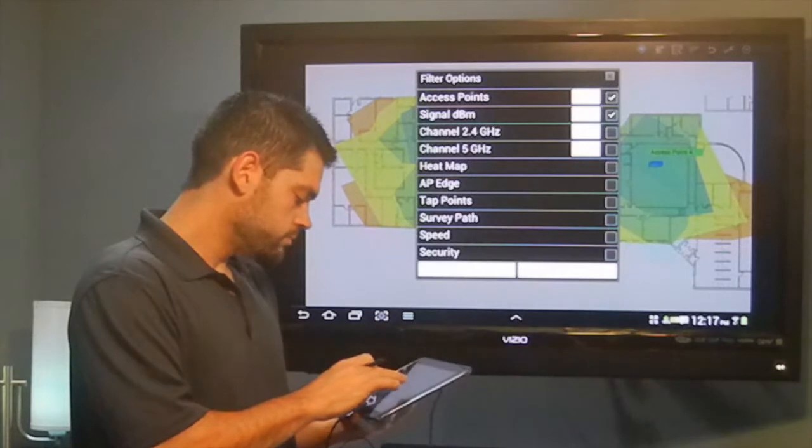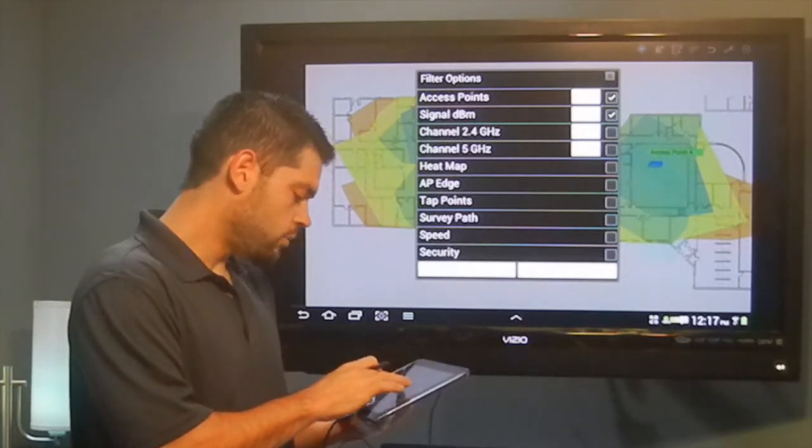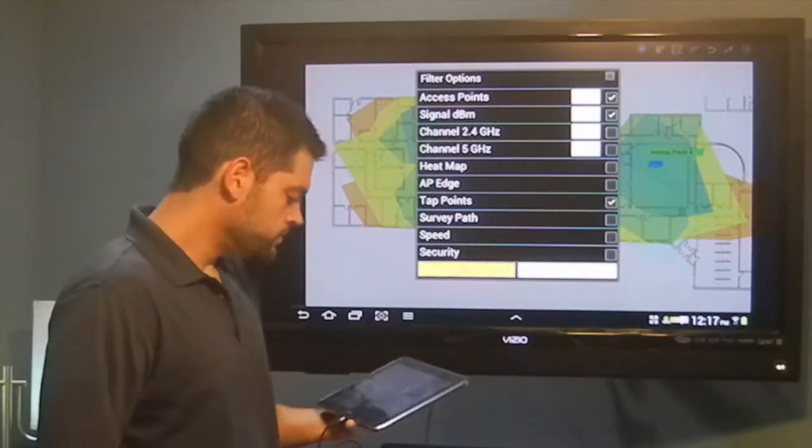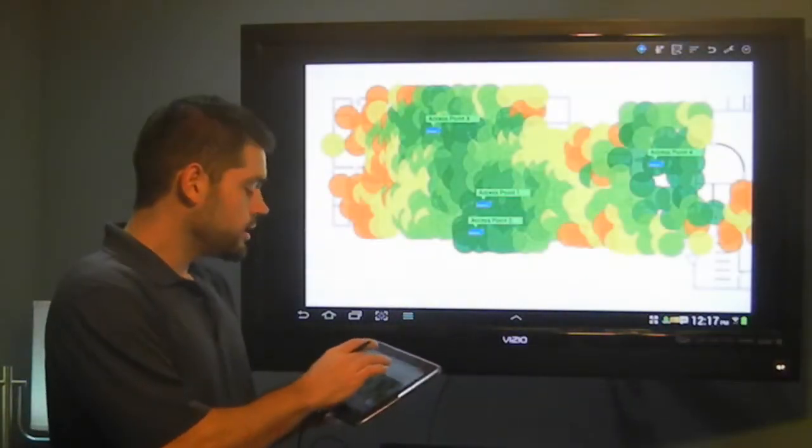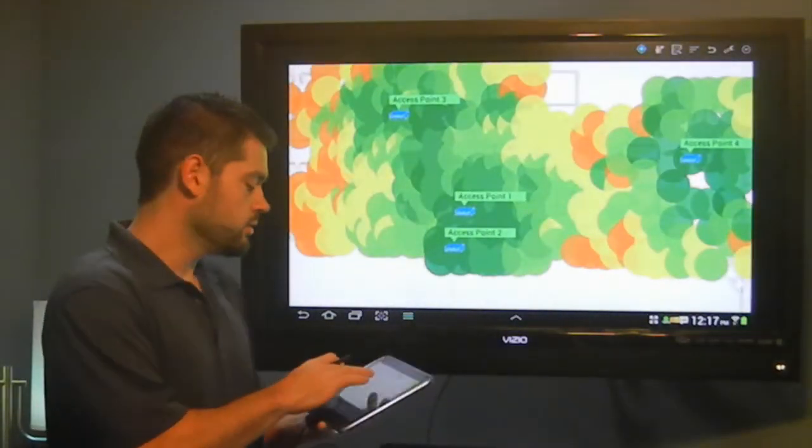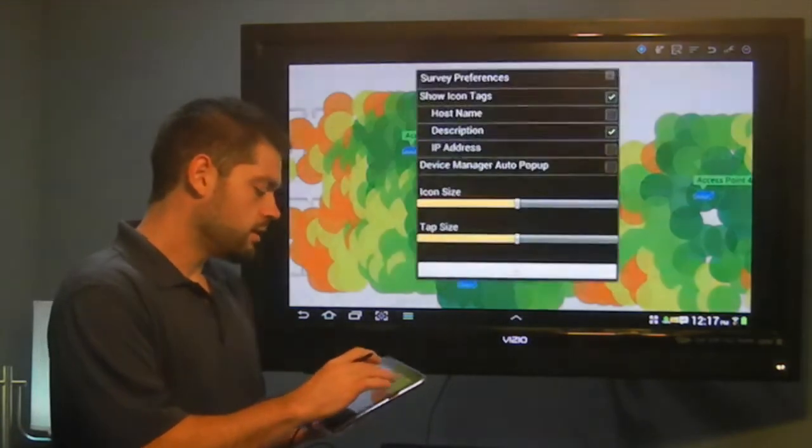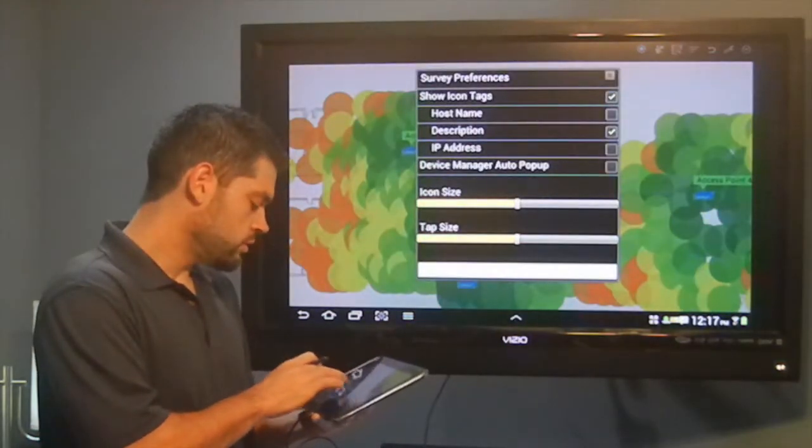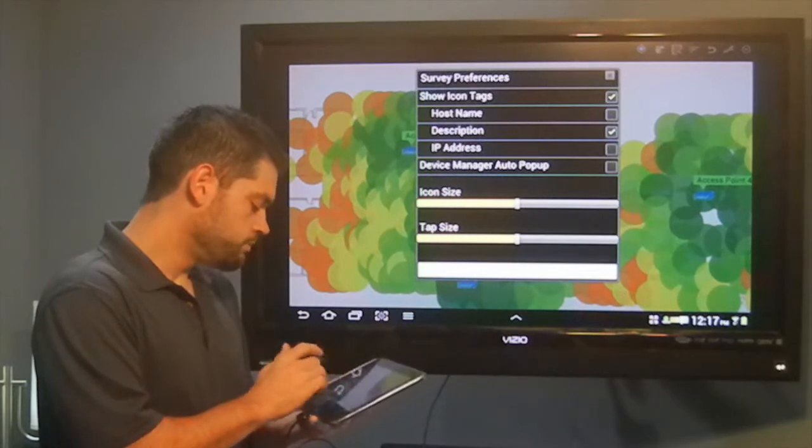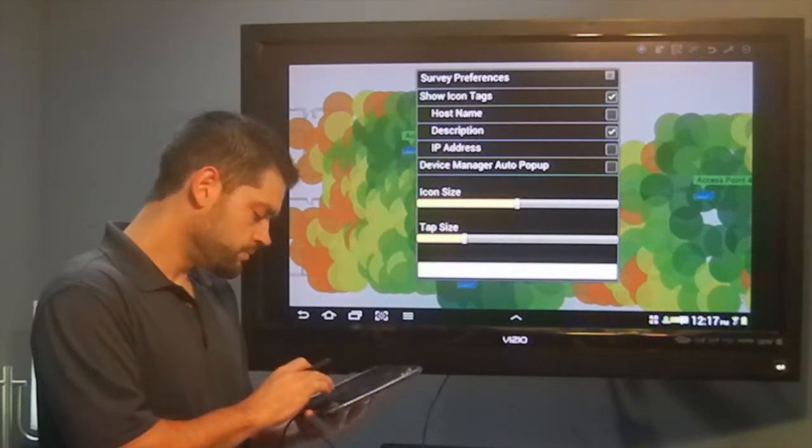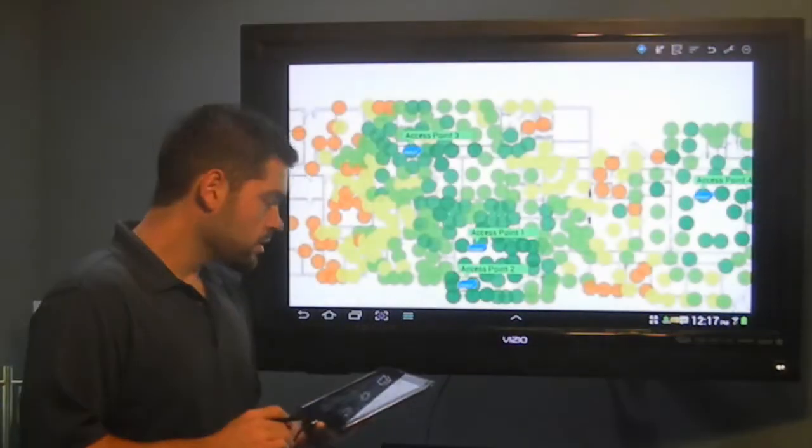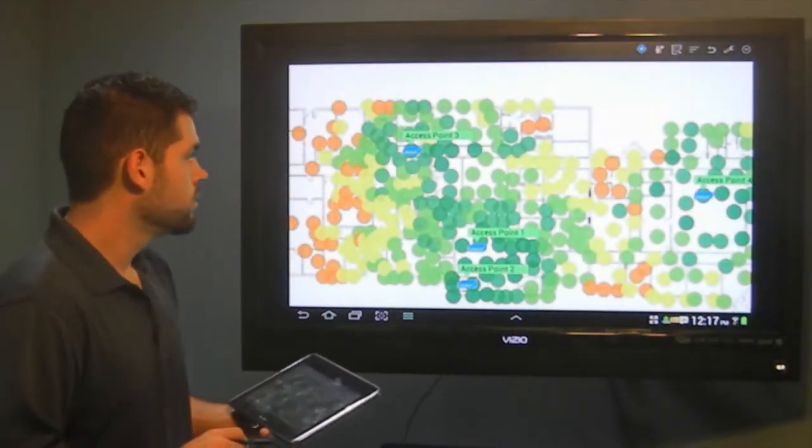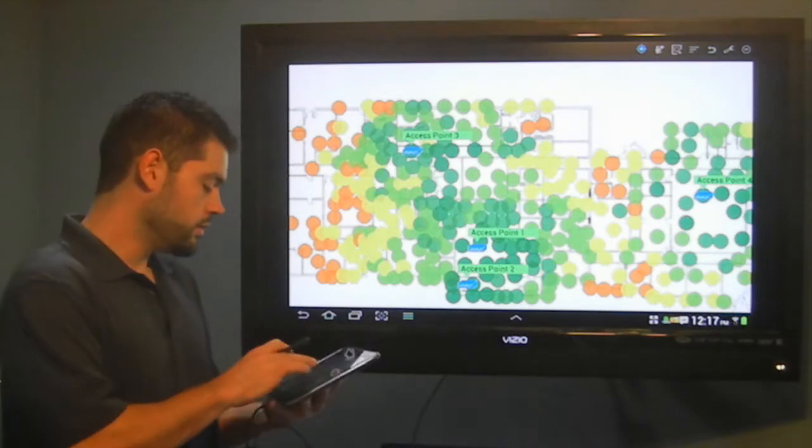I'm going to turn off the heat map and I'm going to turn on the tap points. As you can see, there was a lot of samples taken here to generate this. As a matter of fact, I'm going to reduce the size of these circles so you can see a little better how many there are. It gives you a little better idea. I'm not counting them, but there's a lot.